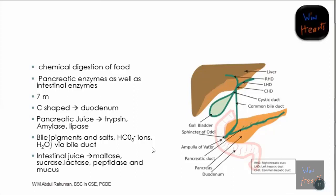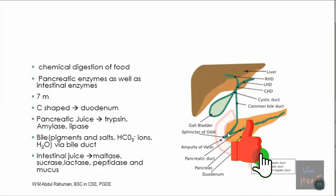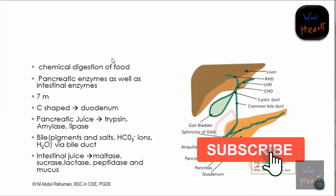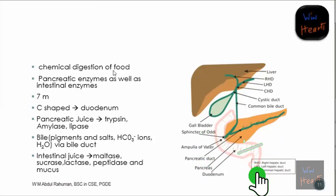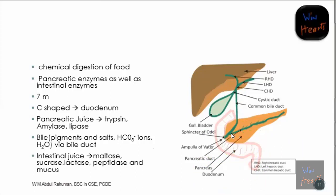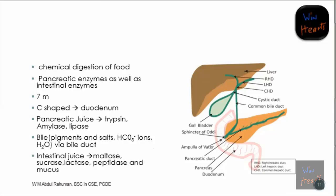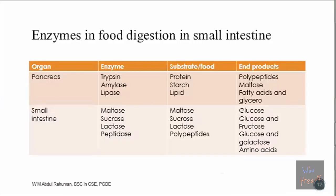An average adult can have up to seven meters of small intestine. All of these juices - bile pigments and pancreatic juice - come through a single pore known as the sphincter of Oddi. They are then mixed with the chyme that comes from the stomach.